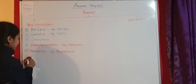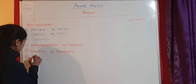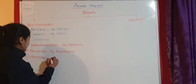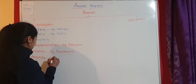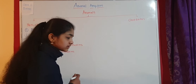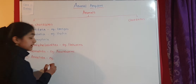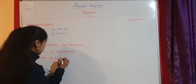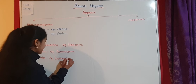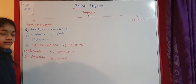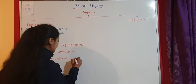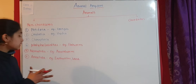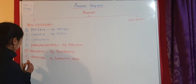The sixth phylum is called Annelida. Annelida includes animals such as earthworms — like Pheretima and Lumbricus, there are many examples of earthworms — and also leeches. These kinds of worms come under Annelida.